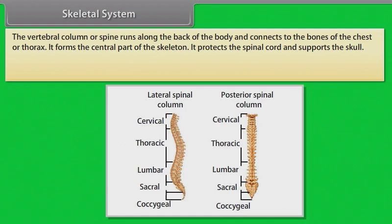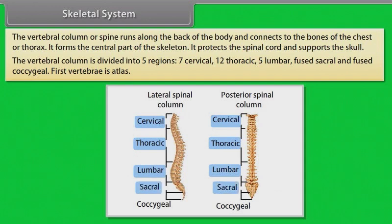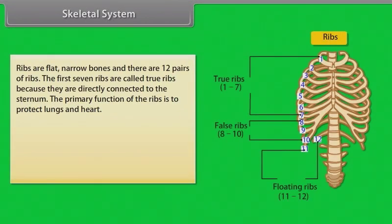The vertebral column, or spine, runs along the back of the body and connects to the bones of the chest or thorax. It forms the central part of the skeleton, protects the spinal cord, and supports the skull. The vertebral column is divided into five regions: seven cervical, twelve thoracic, five lumbar, fused sacral, and fused coccygeal. The first vertebra is the atlas.